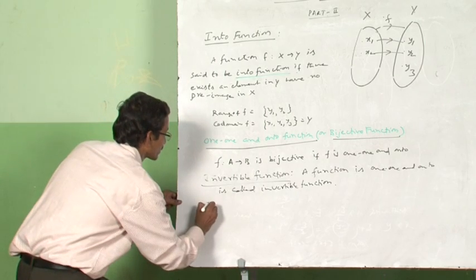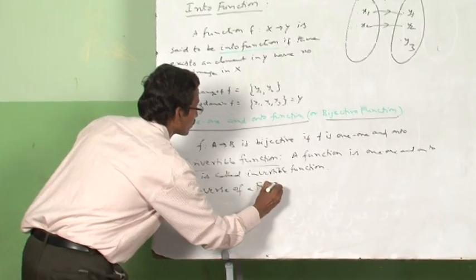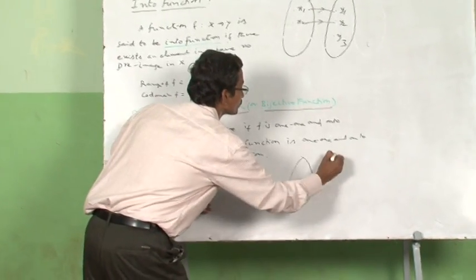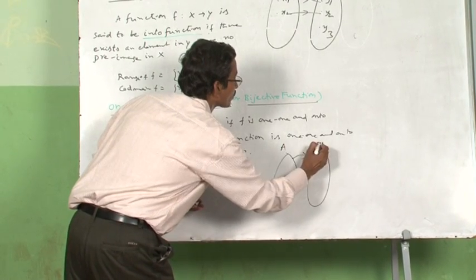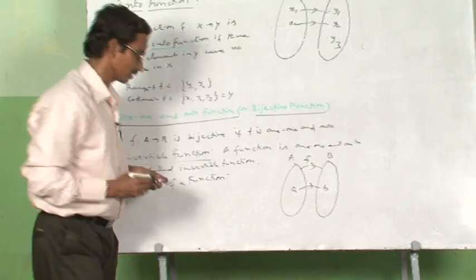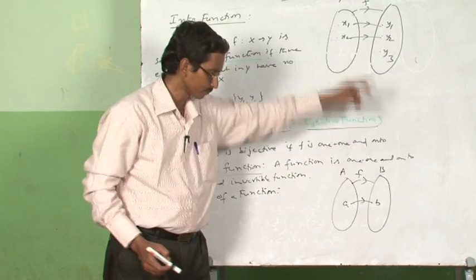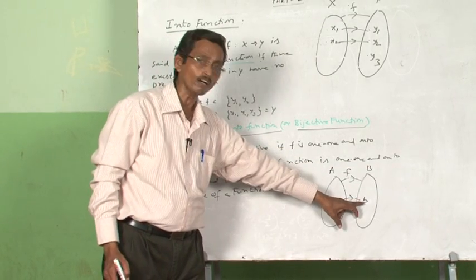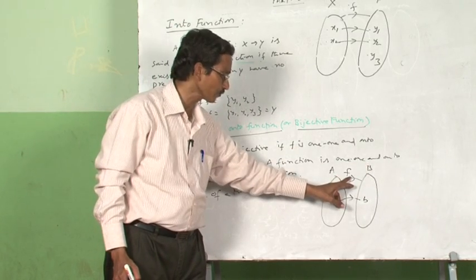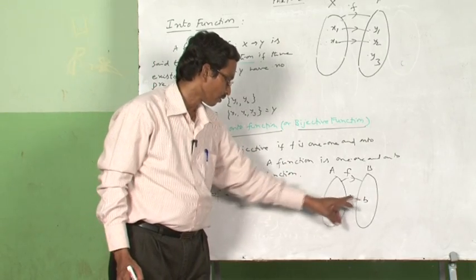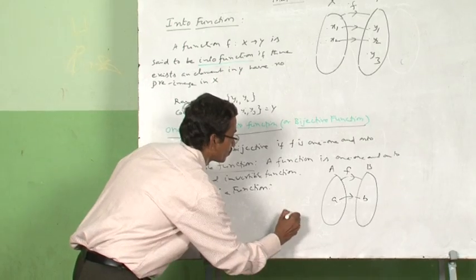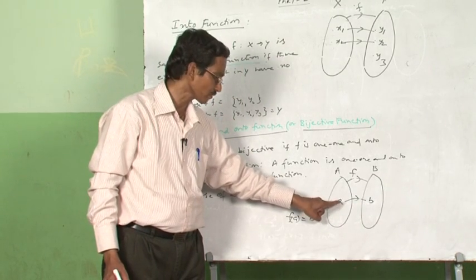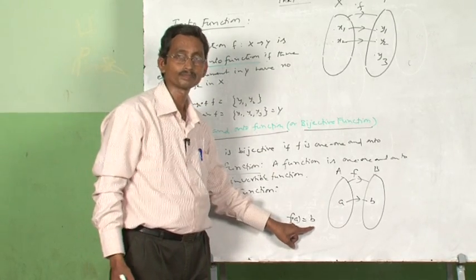I will also discuss inverse of a function in this video — also called invertible function. See the diagram. F is a mapping from A to B. Let A belong to A and B belong to B. Let F mapping from A to B be one-one and onto. Let B be any arbitrary element in set B. Since F is onto, there exists an element A in set A such that F(A) equals B.